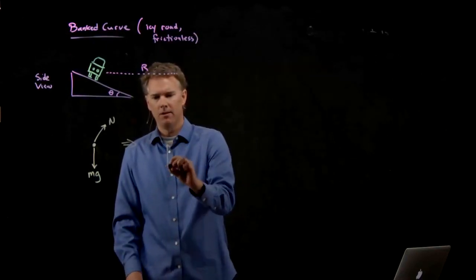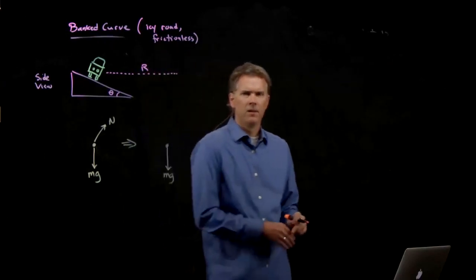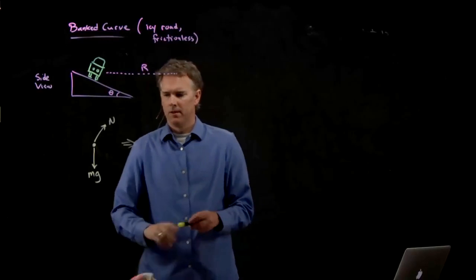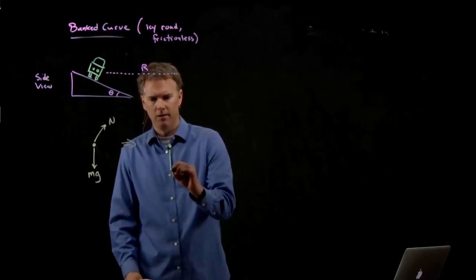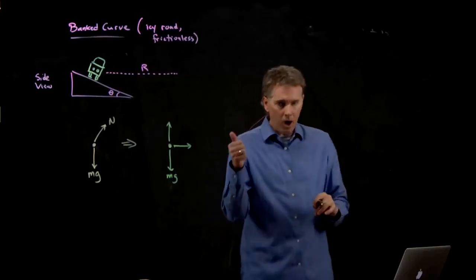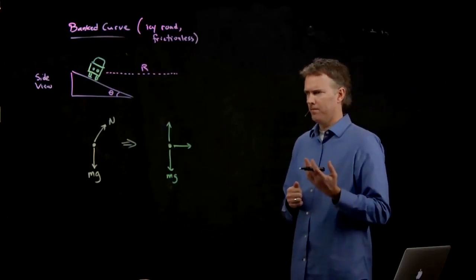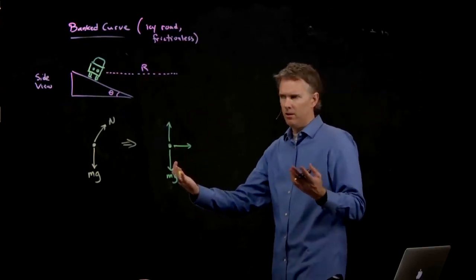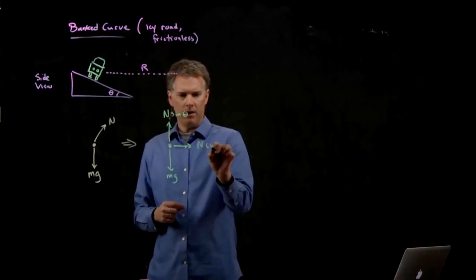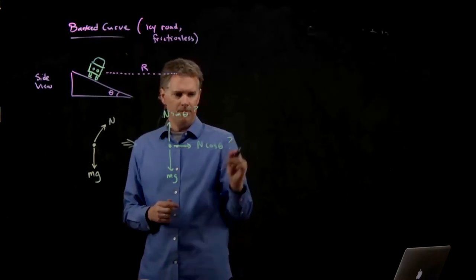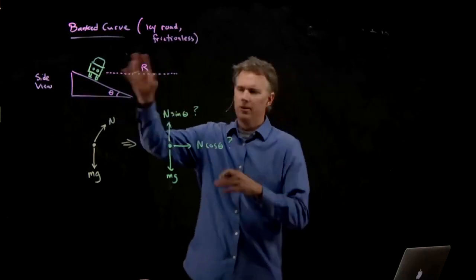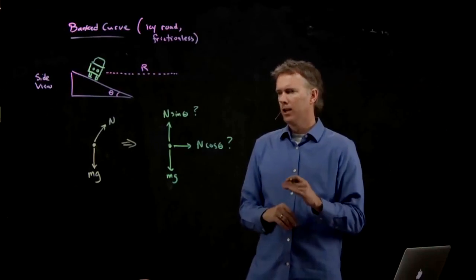So let's redraw it. Mg is down. That seems okay. But how do I break up n into components? I know that there's some component of n to the right, there's some component of n going up, but I don't know which is which. We know that it's got to be related to theta somehow. So it's either n sine theta here and n cosine theta there, or it's flipped.